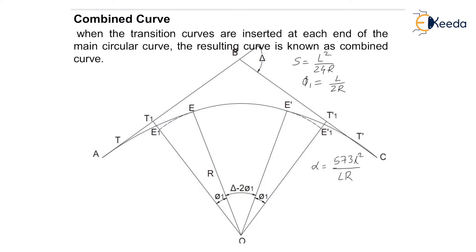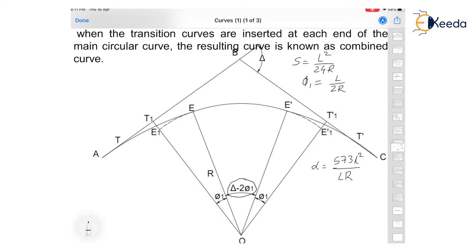Also find out the deflection angle delta for the circular curve using the formula 1718.9 C upon R, which we have seen for Rankine's method. Then find the total tangential angle for the circular curve as the summation of your deltas, and it should be equal to the central angle divided by 2 as a check.